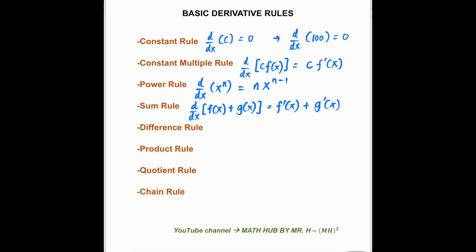The next rule is what we call the difference rule. The difference rule is similar to the sum rule, except the operation is subtraction. Say we have the derivative of f(x) minus g(x). We're getting the derivative of each term, so it will be equal to f prime of x minus g prime of x.